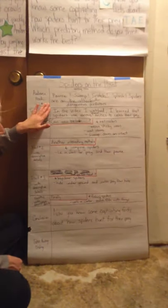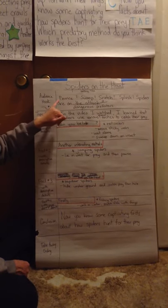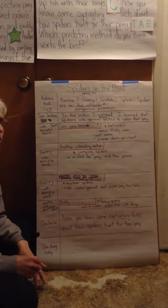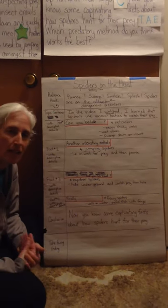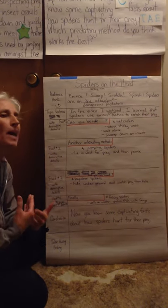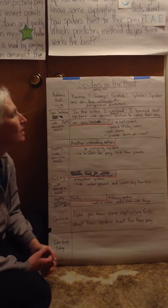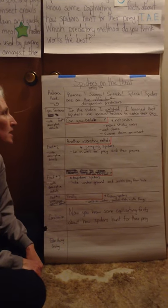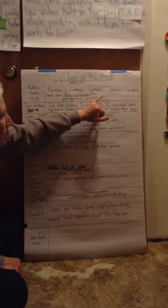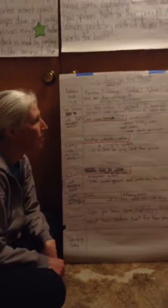The audience hook that I picked is kind of like a power of three, although it has kind of a power of four, but I also use action verbs. When I'm doing descriptive writing, I'm trying to paint a visual picture for the reader so that they can see in their mind by my word choice what is really happening in the action going on with the spiders. So I chose pounce, swoop, snatch, and splash — those are all actions that the spider is doing to really make this writing come alive.